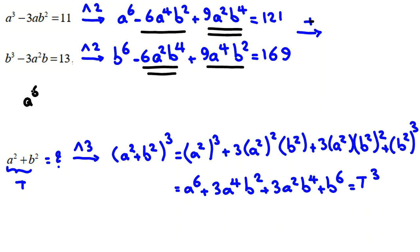It will be a⁶, negative 6a⁴b² one line. Plus 9 this, it will be plus 3a⁴b². Now, consider double lines. It will be 9 minus 6, 3a²b⁴.